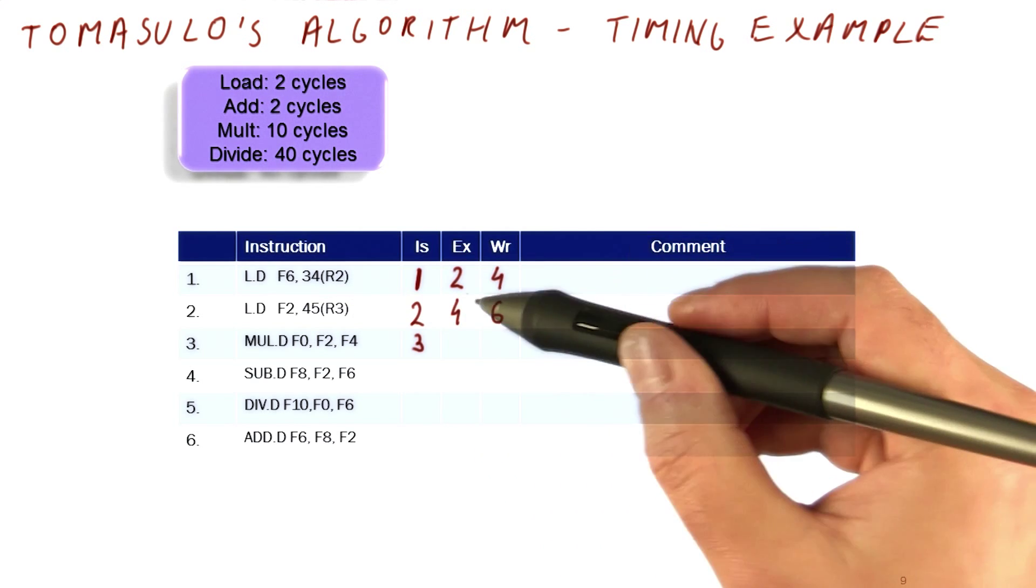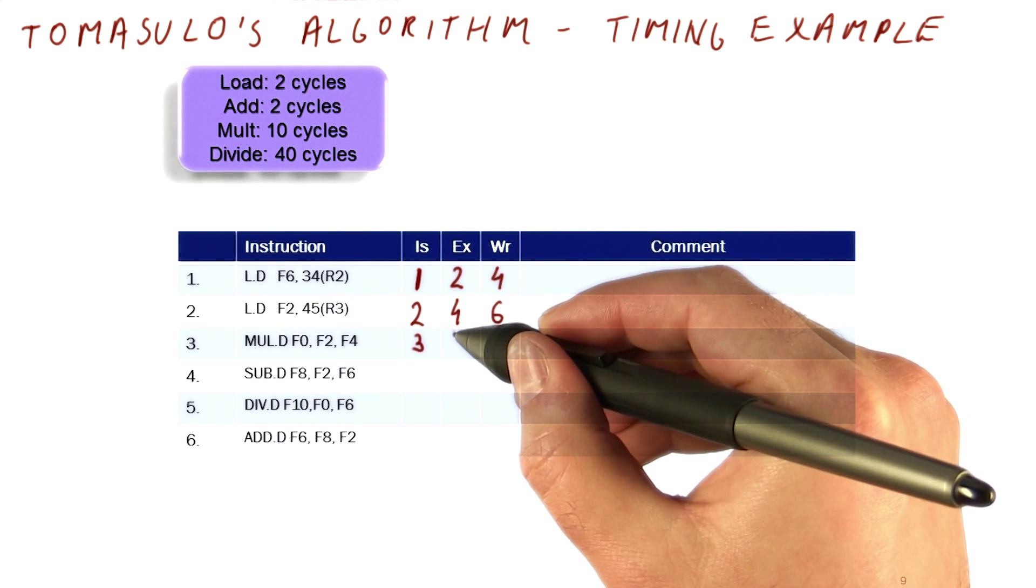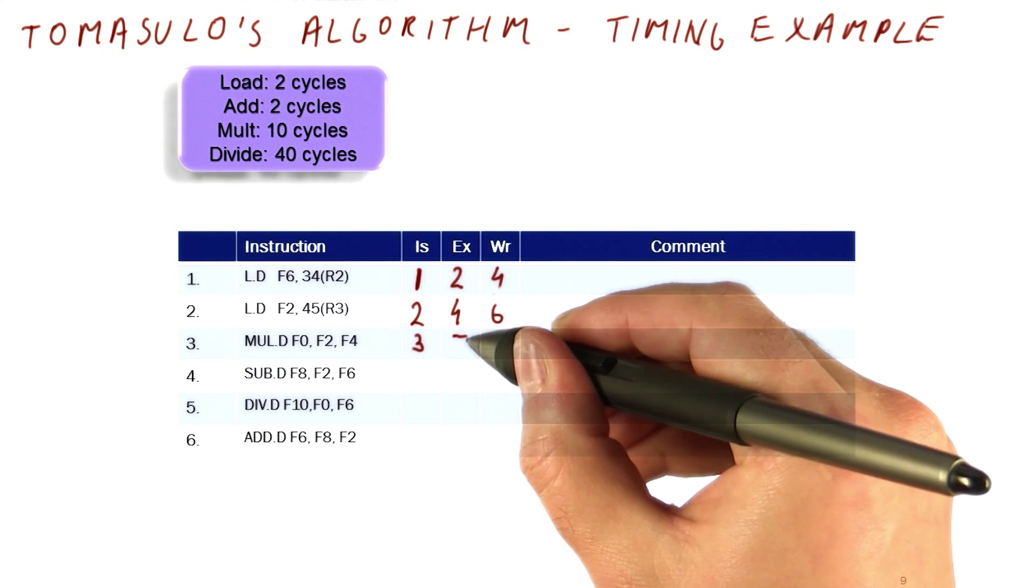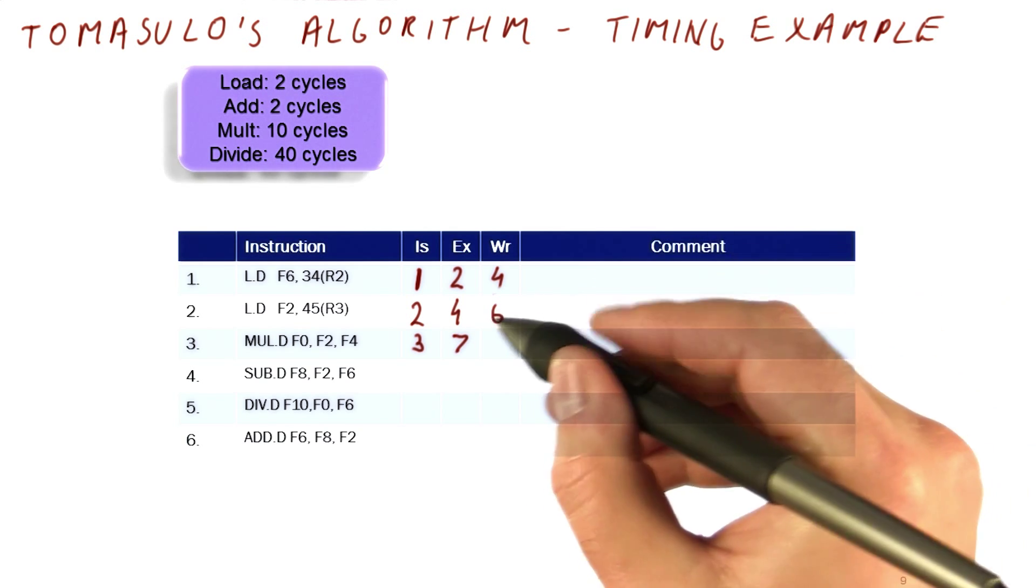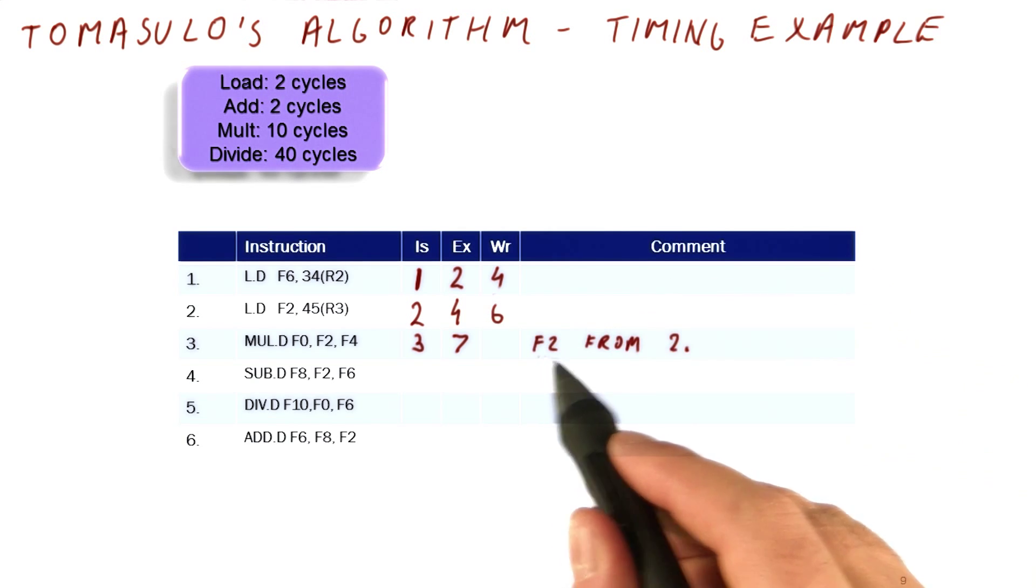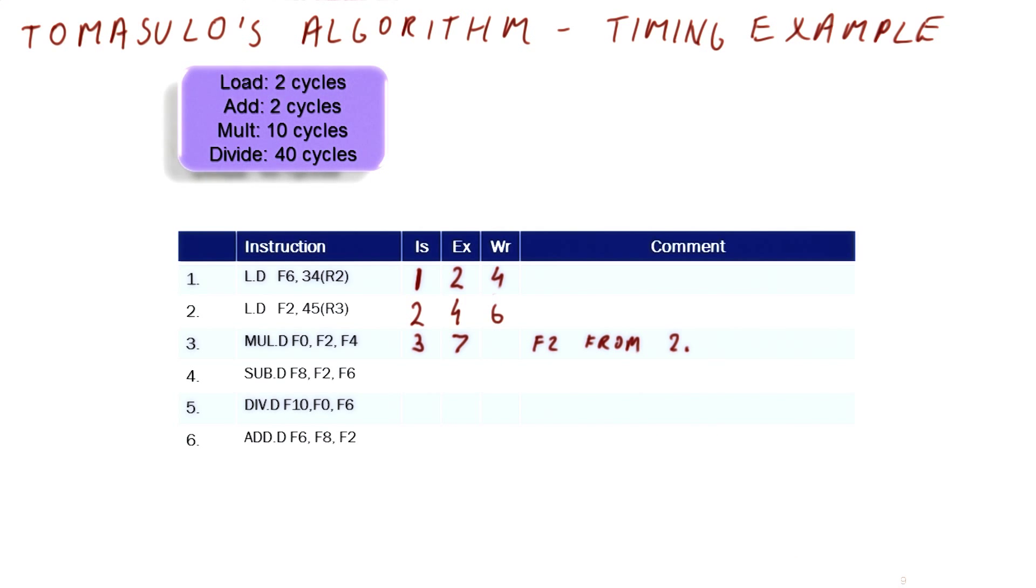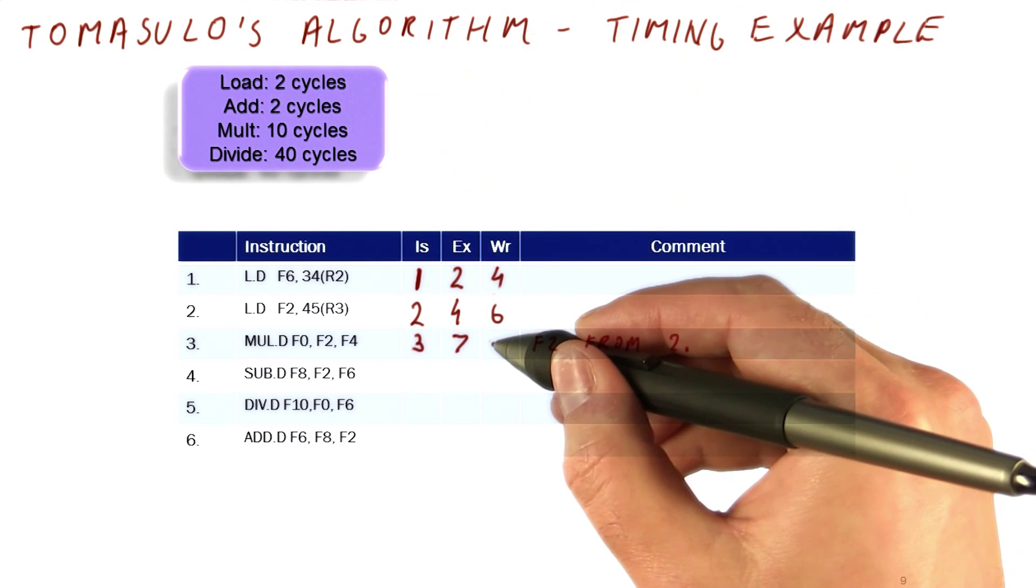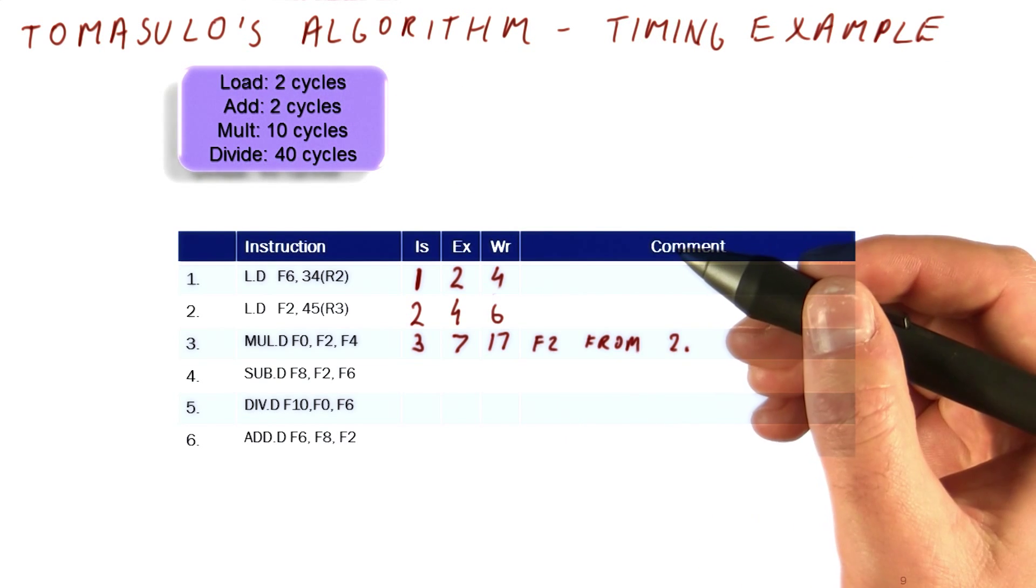F2 is produced by the second load. So actually, this will not be able to execute until cycle seven. Six here means that basically we will have seven. And we can mark here that our F2 comes from instruction two, which is why we had to execute only in the cycle that follows its write. Because this is a multiplication, add ten cycles to that, we're going to try to write the result in cycle 17.